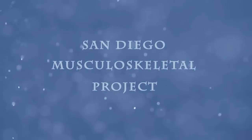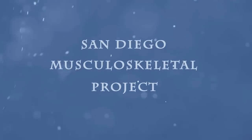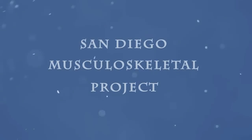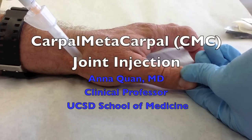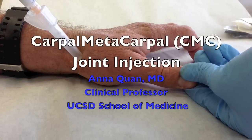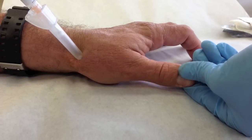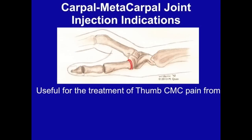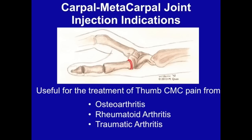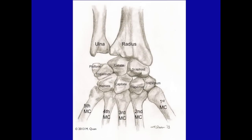The San Diego Musculoskeletal Project presents thumb carpal metacarpal joint injection. Injection of the CMC joint is useful for treatment of pain from osteoarthritis, rheumatoid arthritis, or traumatic arthritis.